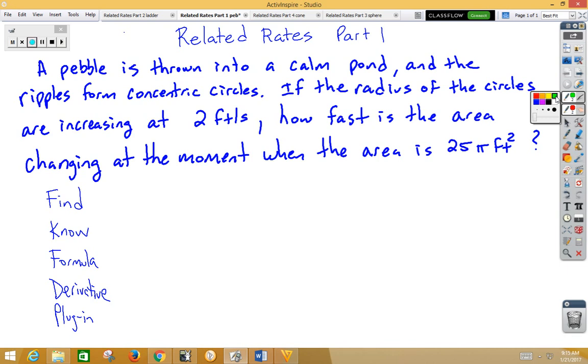In this particular problem what we're trying to find is how fast is the area changing. Well a rate of change is a derivative, so we're trying to find dA/dt, which is the change in area with respect to time. And we're doing it at a particular moment, and that's when the area is 25π feet squared.